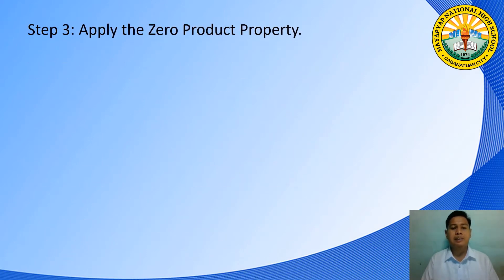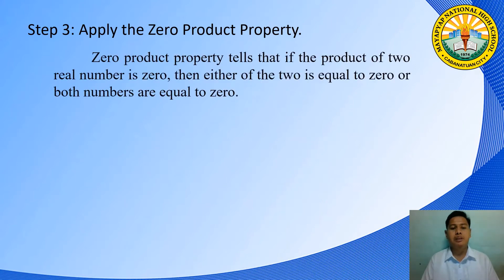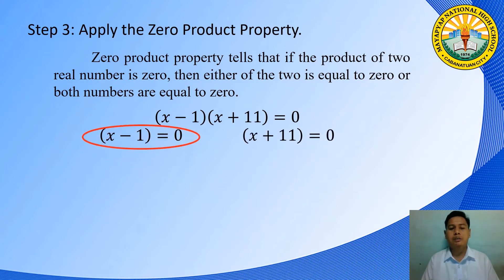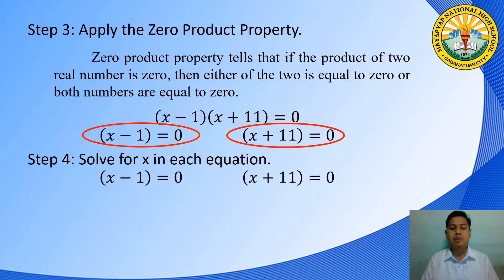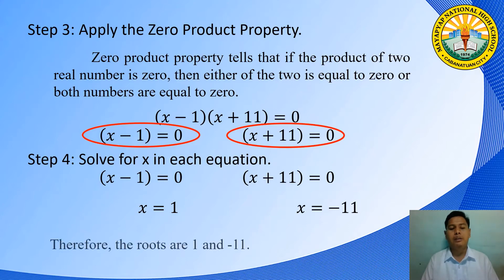Step 3: apply the zero product property. The zero product property states that if the product of two real numbers is 0, then either of the two is equal to 0 or both are equal to 0. We set each factor equal to 0: x minus 1 is equal to 0, and x plus 11 is equal to 0. Step 4: solve for x. The values of x are 1 and negative 11. Therefore, the roots are 1 and negative 11.